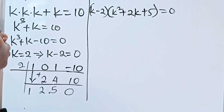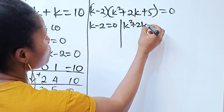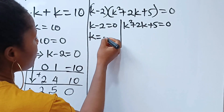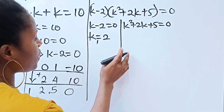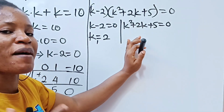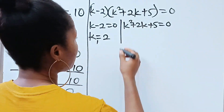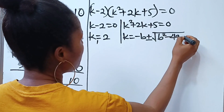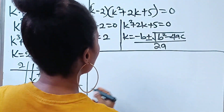From the first equation k minus 2 equals 0, so k equals 2. For the quadratic k squared plus 2k plus 5 equals 0, we cannot factor it, so we use the quadratic formula: k equals negative b plus or minus the square root of b squared minus 4ac, all divided by 2a.